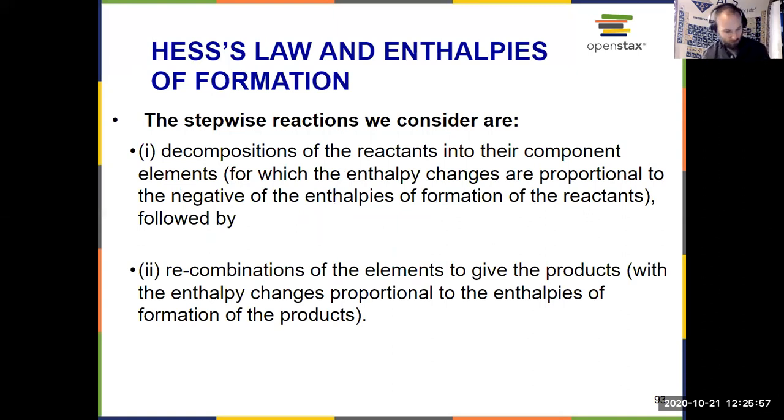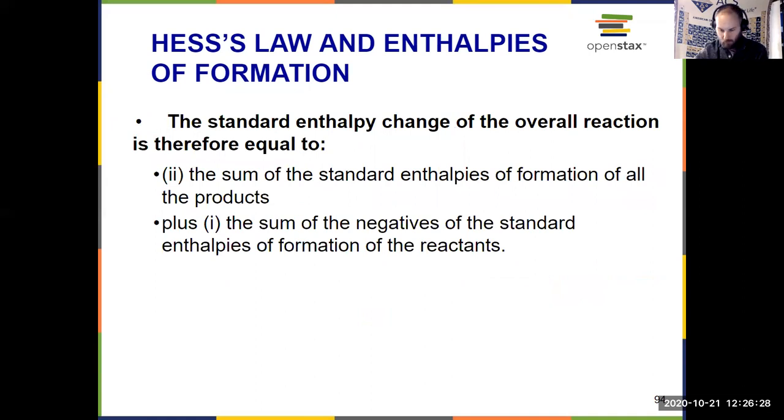Because effectively, what's happening in any chemical reaction, this is an oversimplification, but it's a thought process, is all of the reactants are breaking down into their individual elements. So then the enthalpy changes are opposite of the enthalpy of formation, because they're breaking apart, followed by those elements recombining to form new products. So there we're just thinking about delta HF of the products, which tells us, in a thought process, we'll see the equation on the next slide, what we're doing with Hess's law, breaking things down and then building them back up. So we have to just consider the sum of the enthalpies of formation of the products, plus the sum of the negatives of the enthalpies of formation of the reactants. So the reactants are negative, and the products stay positive as they are.